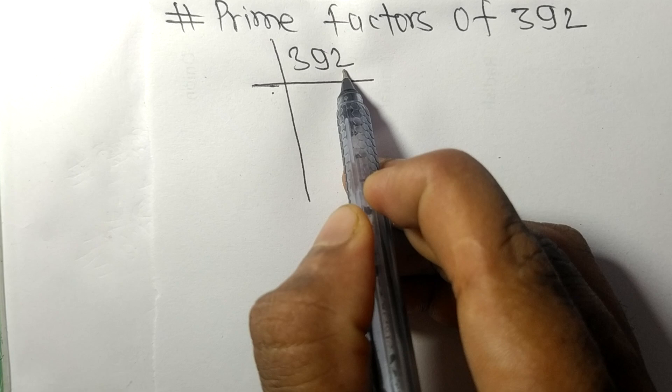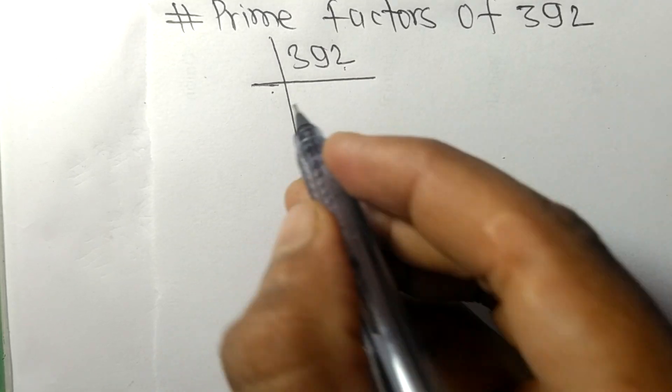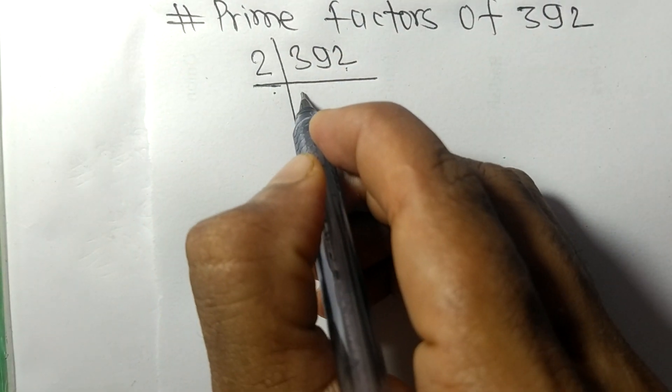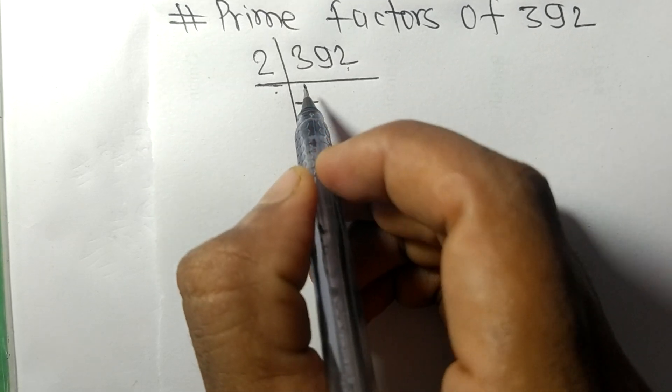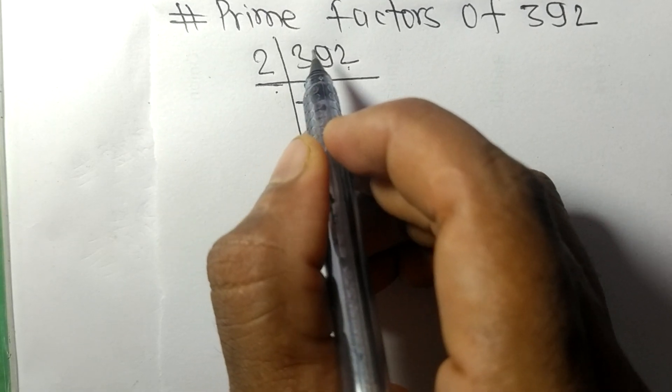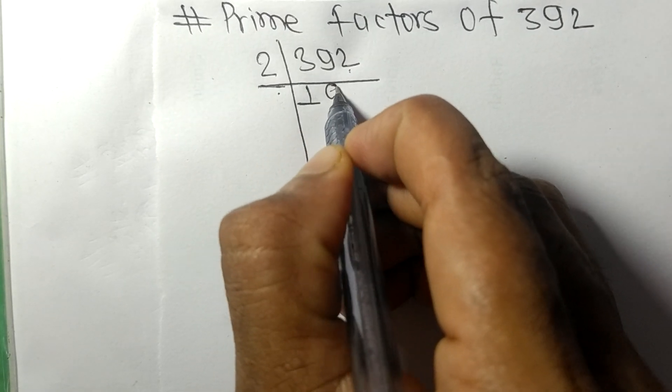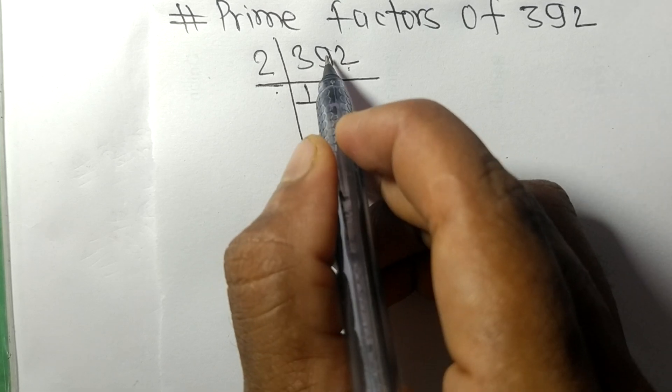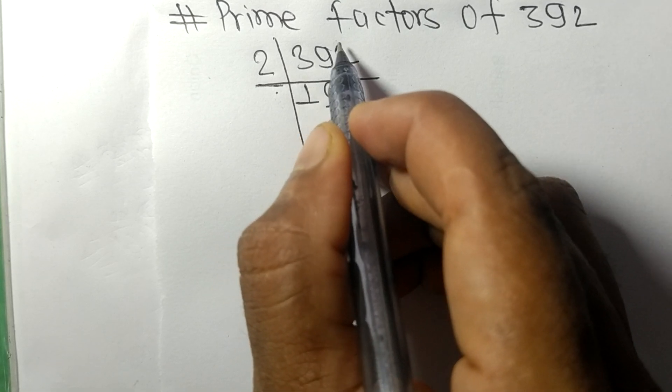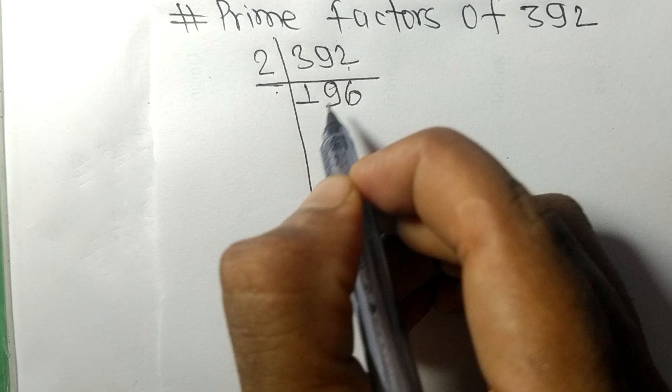392 is an even number, so it is divisible by 2. Two times one equals two, remainder one. One nine is nineteen. Two times nine equals eighteen, remainder one. One two is twelve. Two times six equals twelve.